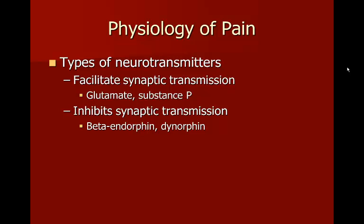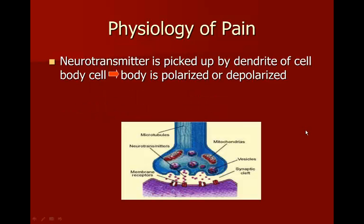These two inhibitors — beta-endorphin and dynorphin — sound like medicine because they are natural painkillers that the body makes on its own. Whenever you take something like morphine, Tylenol, Aleve, or Advil, that chemical from the pill gets into your bloodstream, into the synaptic cleft, and binds to these receptors. When the pain neurotransmitter travels through the synaptic cleft, there's nowhere for it to bind, and so it stops the pain.